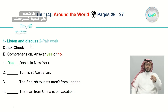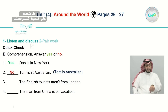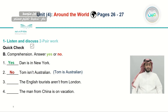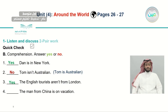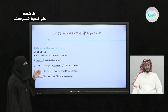Yes, it's true — the conversation took place in New York City. Number two: Tom isn't Australian. No, actually Tom is Australian — remember when the reporter introduced him. Number three: the English tourists aren't from London — they replied they were from Liverpool, so yes, correct. Number four: the man from China is on vacation. He mentioned his purpose was business, not vacation, so the answer is no. Take a moment and double check your answers.